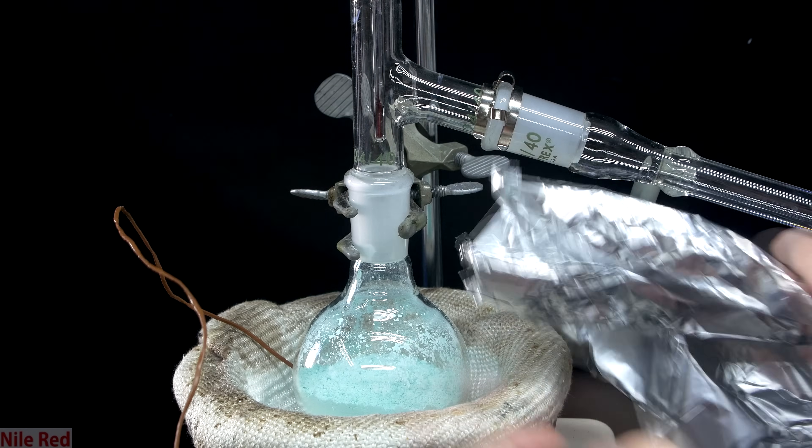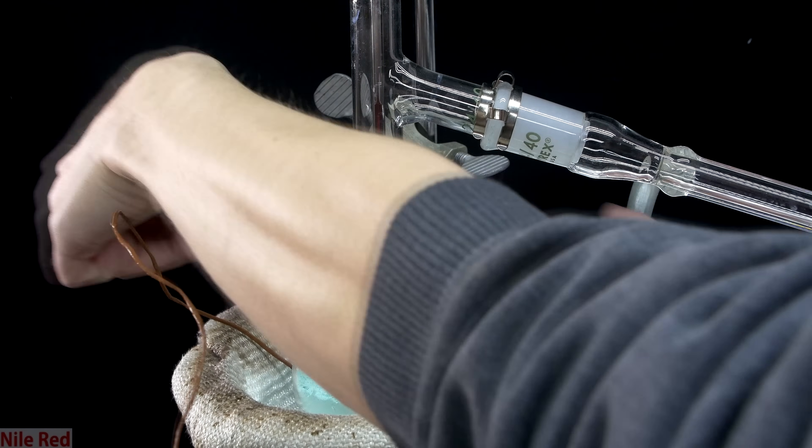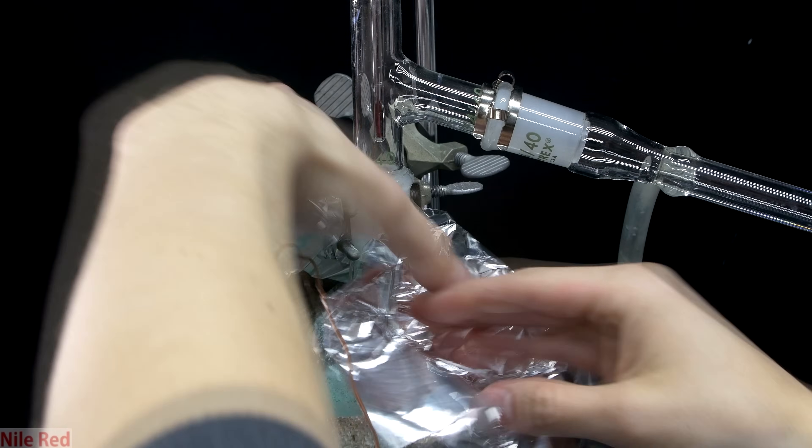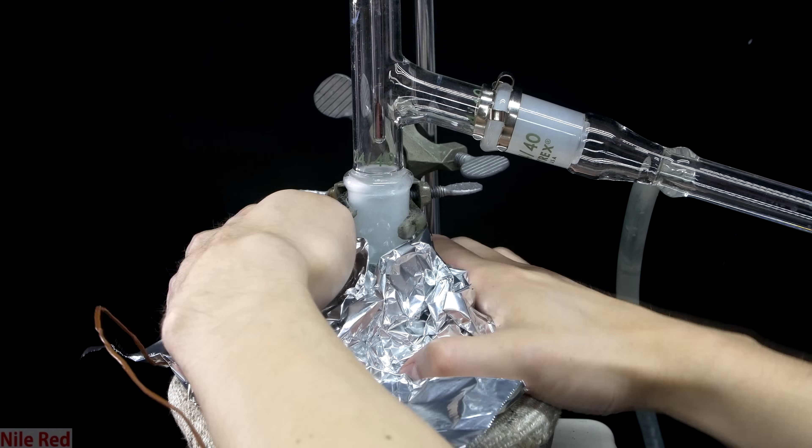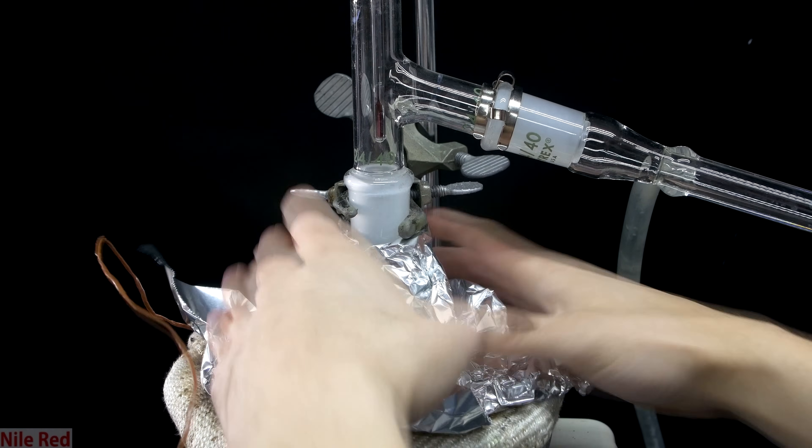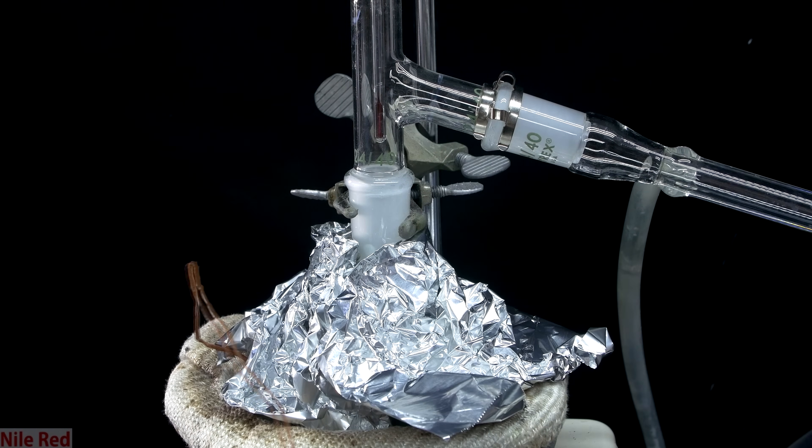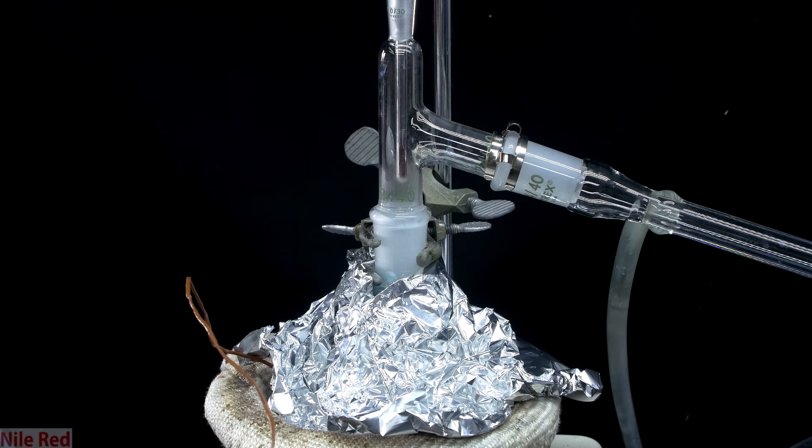The next thing to do is to put some aluminum foil around the flask and insulate it so that the entire flask can heat up more uniformly. The wire that you see on the left there is part of my digital thermometer, and I'm using it so that I can monitor how hot the heating mantle is. When it all seems good, we can turn on the heating mantle and start to heat things up, and the first thing that comes over will be water or a mix of water and pyridine.